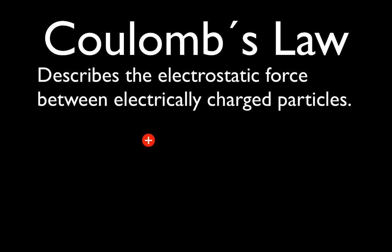You have to have two particles. We could have one positively charged particle and one negatively charged particle — particle one on the left and particle two on the right. It's not necessarily a proton and an electron, although it could be, but it could be any charged object. When we have charged objects, they will exert a force on each other. Since they are oppositely charged, they are going to be attracted to each other.